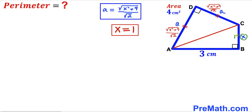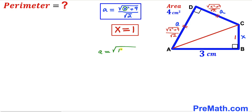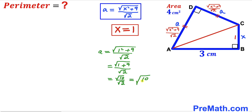Now we calculate side length 'a' by substituting x = 1: a = √(1² + 9) / √2 = √10 / √2 = √(10/2) = √5. So side lengths AD and CD both equal √5 cm.